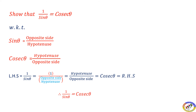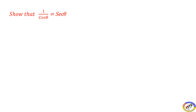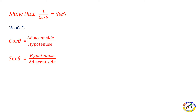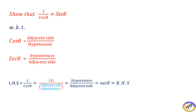1 by cos θ is equal to secant θ. This follows the same approach as the sine-cosecant formula. Cos θ is equal to adjacent by hypotenuse, so showing the LHS: 1 by cos θ equals adjacent by hypotenuse divided, which is nothing but the RHS. Therefore, 1 by cos θ is equal to secant θ.